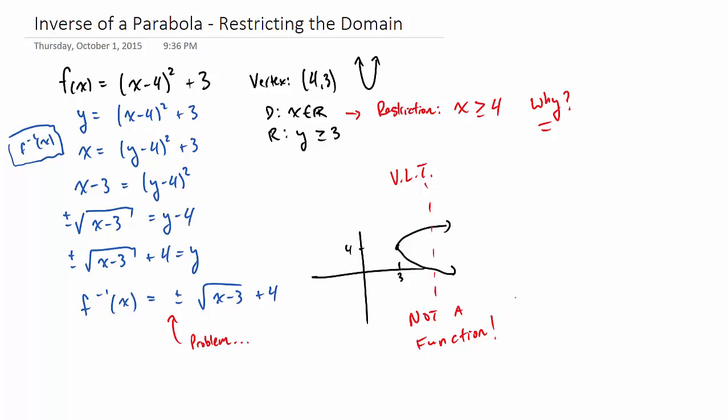So our goal, by setting our restriction on the domain of the original function, let's see what happens on the graph. Our goal is to make it become a function when we invert it.